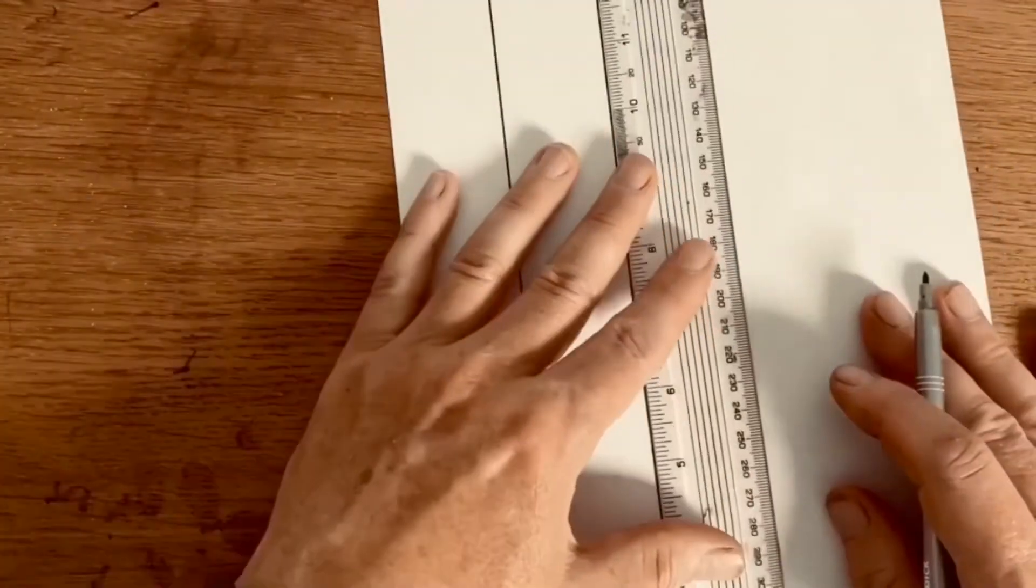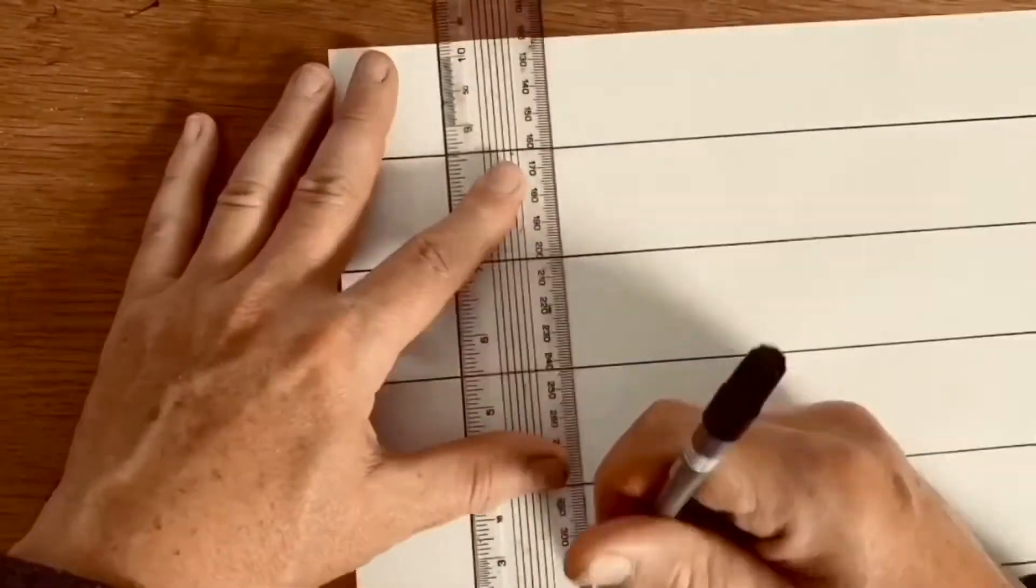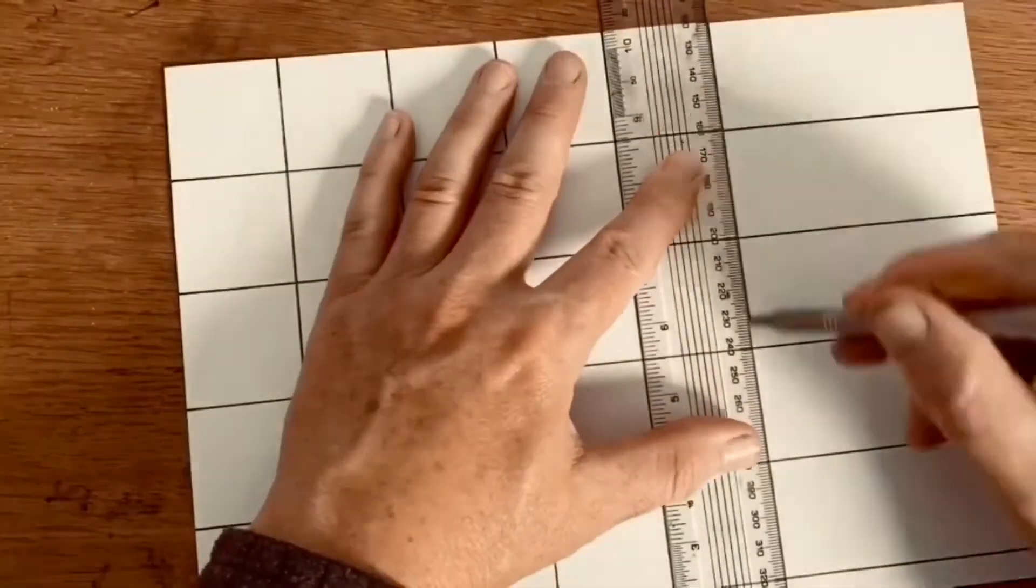Make a grid of squares by using a big ruler to draw parallel lines across an A4 sheet of paper. Turn and repeat. Now you have squares for your daily draw.